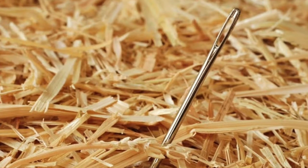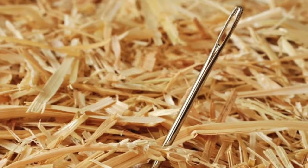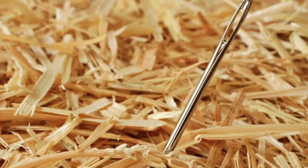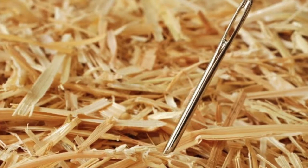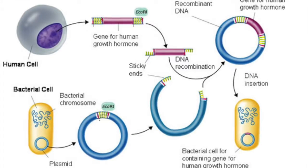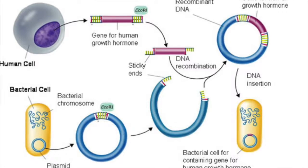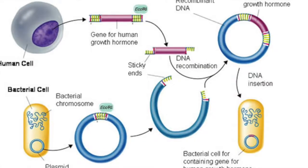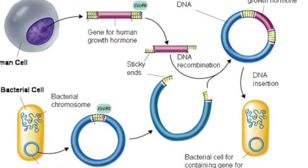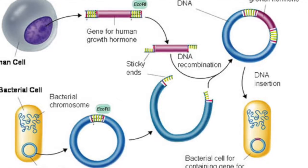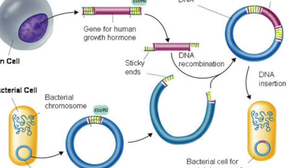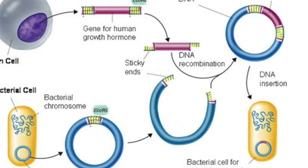Prior to this technology, finding a specific gene within DNA could be compared to finding a needle in a haystack. However, recombinant DNA technology has made it possible to isolate one gene or any segment of DNA, allowing researchers to mutate it in very specific ways and reinsert the modification into a living organism.